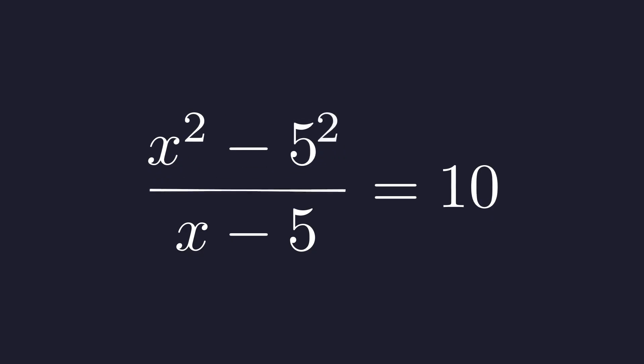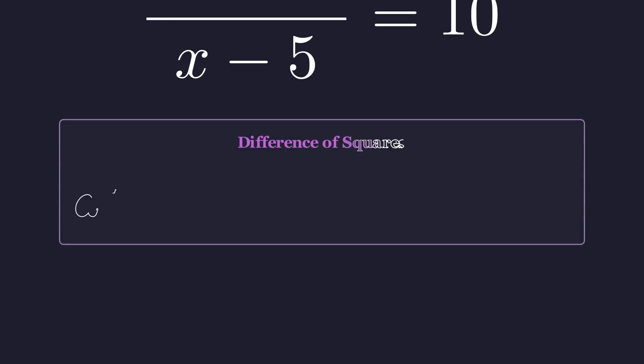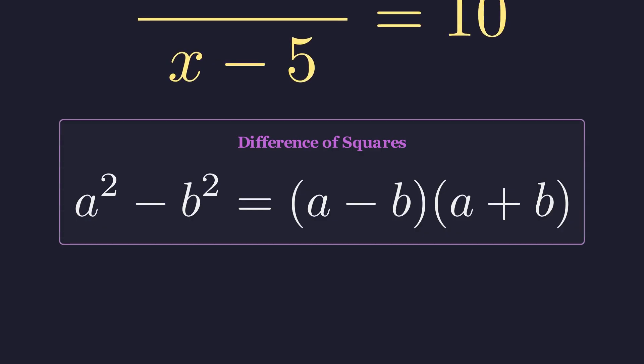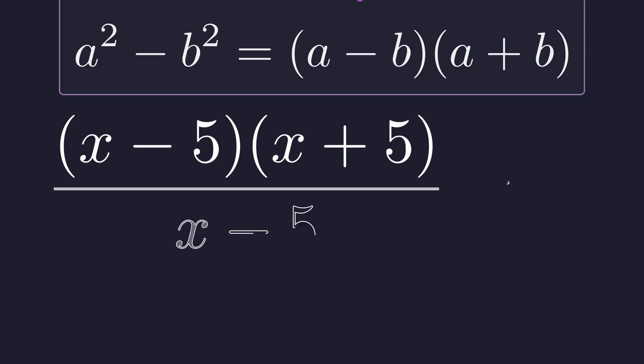The difference of squares pattern tells us that a squared minus b squared factors as the product of a minus b times a plus b. It's an incredibly useful factoring tool. Applying this pattern to our numerator, the numerator becomes x minus 5 times x plus 5.